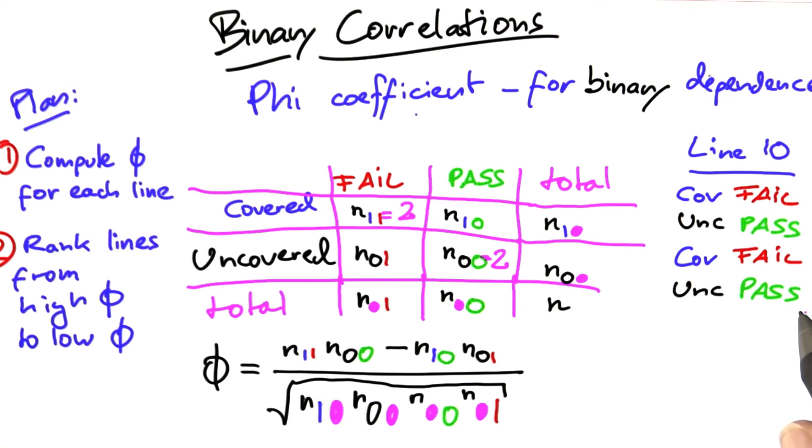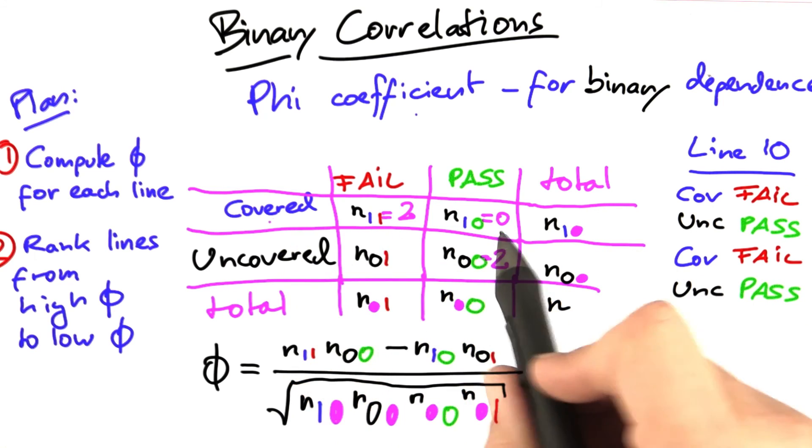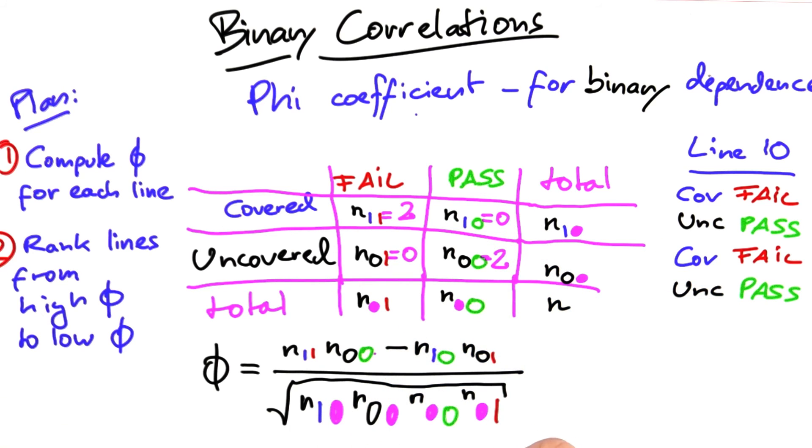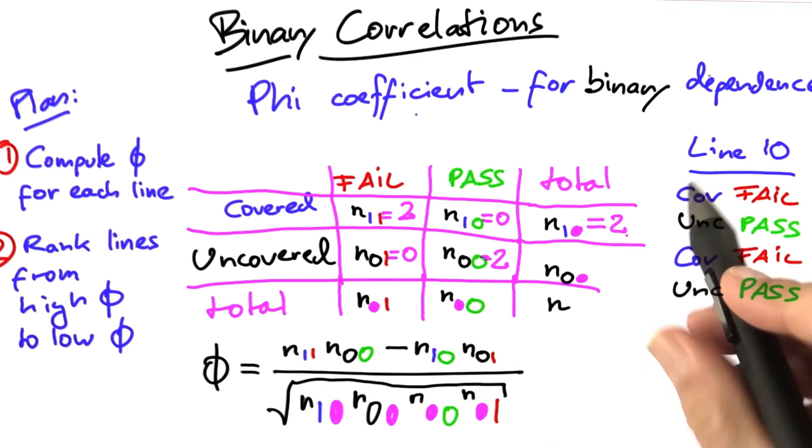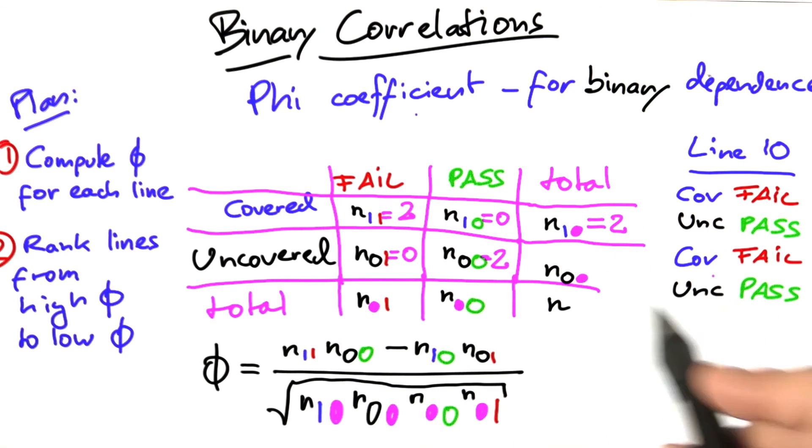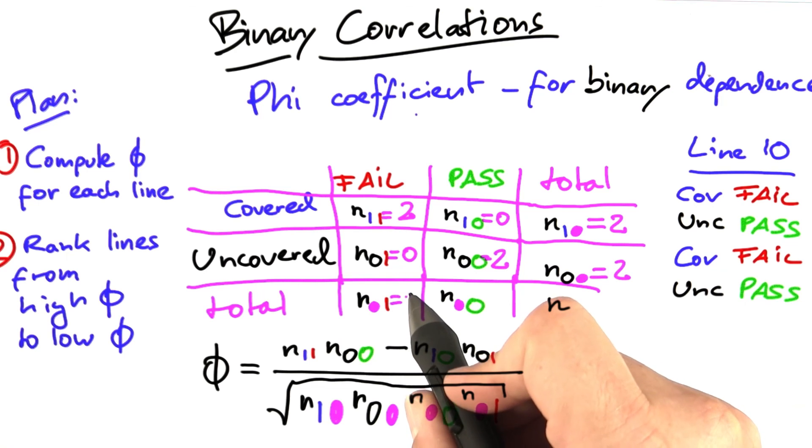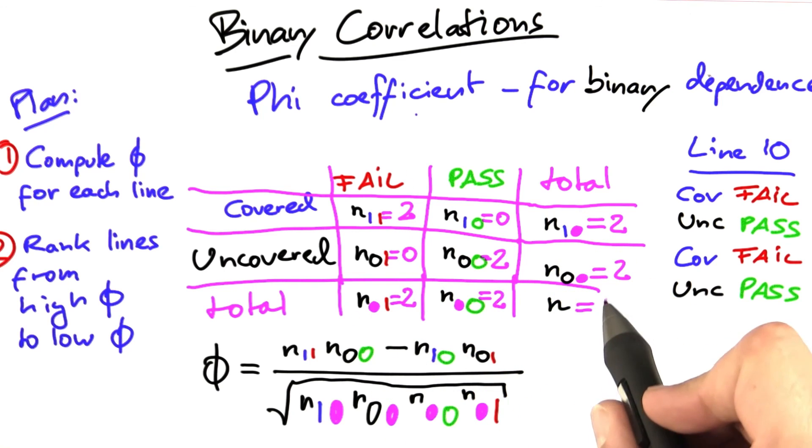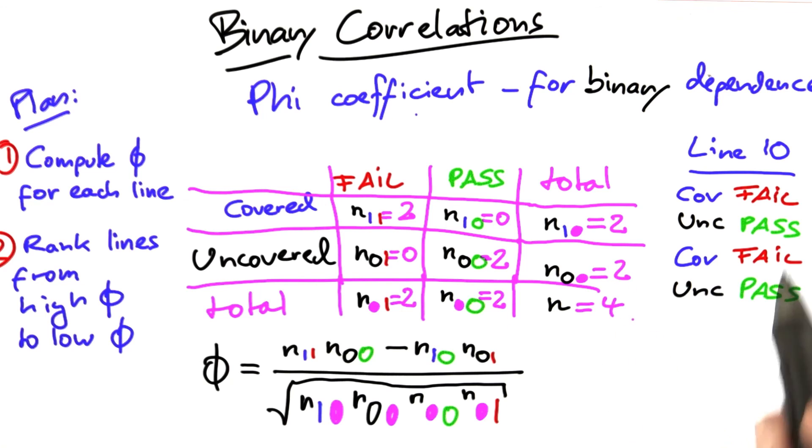Let's assume these are just the four runs that we observed. Then we have seen no instance of the line being covered and passing, and no instance of the line being uncovered and failing. Let's quickly sum up the remaining rows and columns. We have seen two instances where the line was covered, and two where it was uncovered. We have seen two instances where it failed, and two instances where it passed. Total number of events is 4.